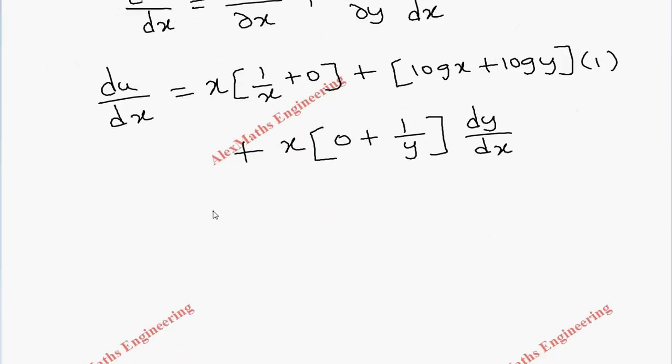Now let's simplify this. When I multiply x inside, this will get cancelled. So remaining is 1 plus, when I combine these two terms, log x plus log y, which is log xy, plus when I multiply x inside, it will become x by y into dy by dx.